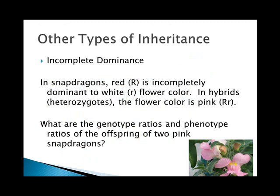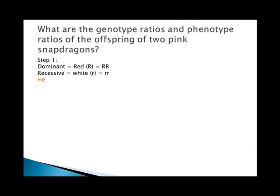What I showed you before was single-gene dominance. Now we're on to other types. Incomplete dominance is common in flowers — specifically snapdragons. Red is incompletely dominant to white, and in heterozygotes the result is pink. So in step one you list three combinations: red is big R big R, white is little r little r, and pink is big R little r.